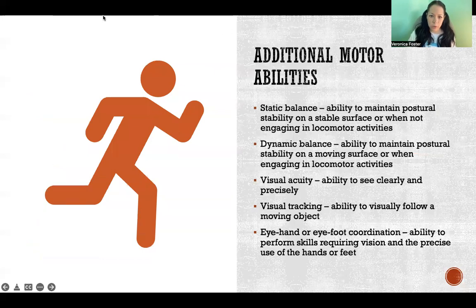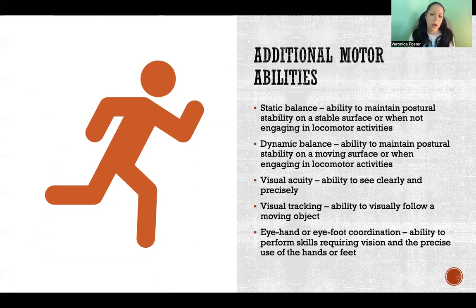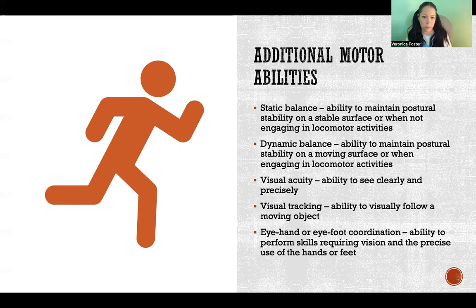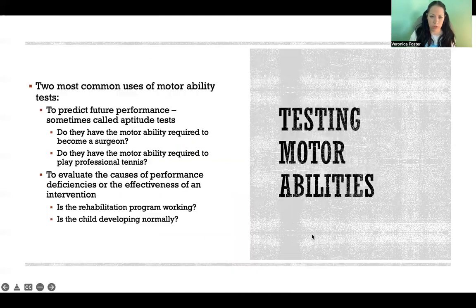There are some other motor abilities worth mentioning that are not included in this taxonomy: static and dynamic balance, as discussed in the previous video, and a few others related to the perceptual system, like visual acuity, visual tracking, and eye-hand and eye-foot coordination. We will talk more about how our sensory systems are very important in motor control and coordination.